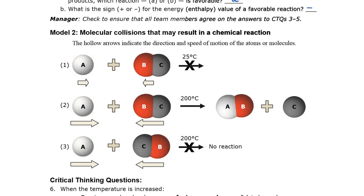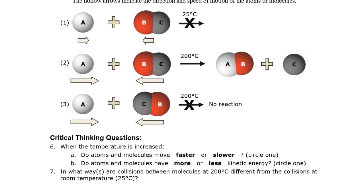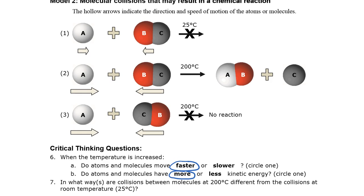We're ready for Model 2 — a picture of molecular collisions that may result in a chemical reaction. The hollow arrows indicate the direction and the speed of motion of the atoms or molecules. Question 6 asks you to circle a couple of choices on A and B. I'm sure you circled faster and more. From reaction 1 to 2, I've increased the temperature and the arrows get larger, indicating higher speed and more kinetic energy.